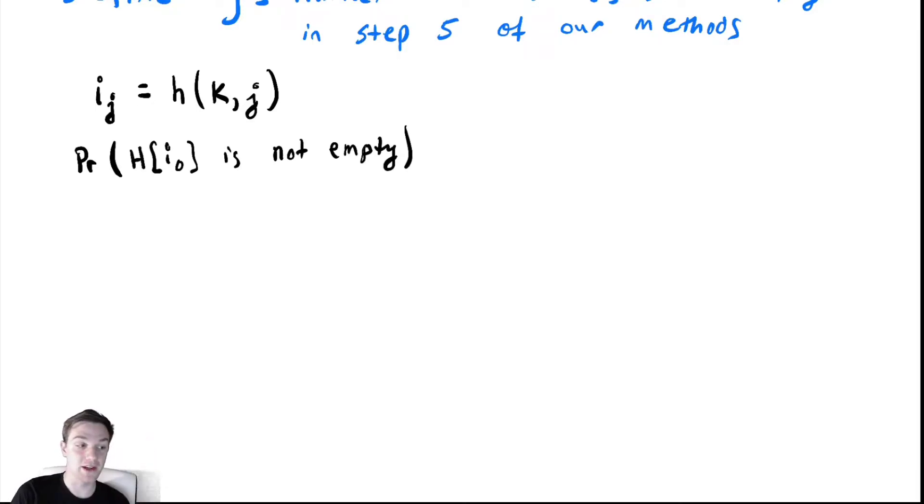We want to know the probability that h at location i_0 is not empty. What is this probability? Let's define our notions of size. Let m be the size of the table and n the number of elements.